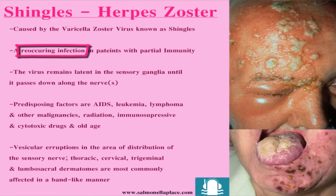It is a recurring infection because it happens at least once in the patient's lifetime. The second time is when the patient is over 50 years of age and usually a woman, but the first time is as a child in the form of chickenpox.